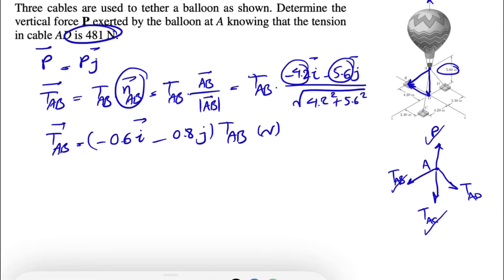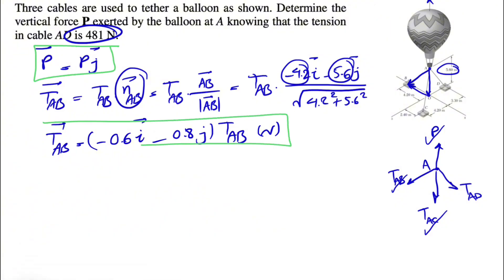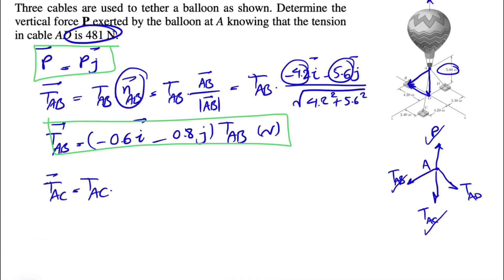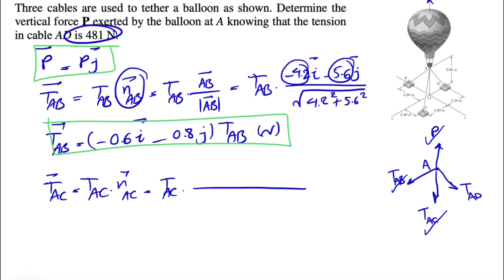So far we've found P and T_AB. Now let's find T_AC using the same approach: T_AC times the unit vector of AC, which is vector AC over the magnitude of AC. Moving from A to C: for the x-component we're moving in the positive direction, giving positive 2.4 i.